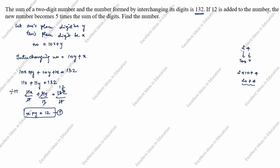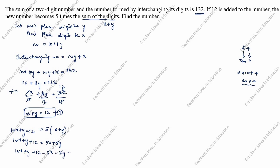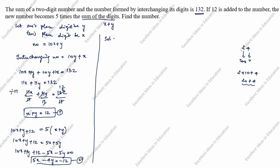Next, if 12 is added to the number (10x + y), the new number becomes 5 times the sum of the digits. So: (10x + y) + 12 = 5(x + y). Expanding: 10x + y + 12 = 5x + 5y. Bringing terms to one side: 10x + y + 12 - 5x - 5y = 0, which gives 5x - 4y = -12. This is the second equation.